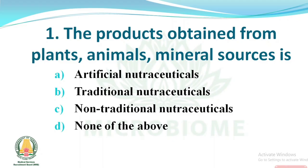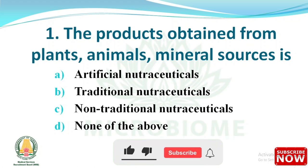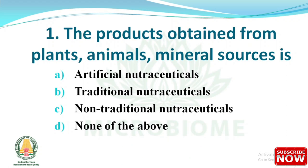The first question: products obtained from plants, animals, and mineral sources are called — options: (A) artificial nutraceuticals, (B) traditional nutraceuticals, (C) non-traditional nutraceuticals, (D) none of the above. The right answer is option B, traditional nutraceuticals. Nutraceutical combines two words: 'nutrient' meaning nourishing food component, and 'pharmaceutical' meaning medical drug.